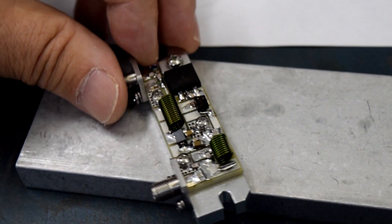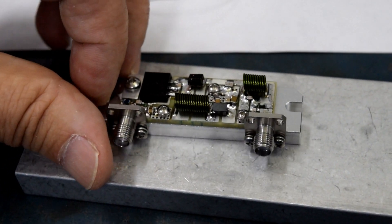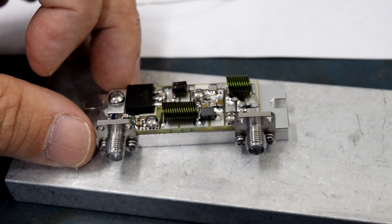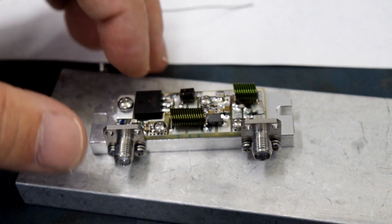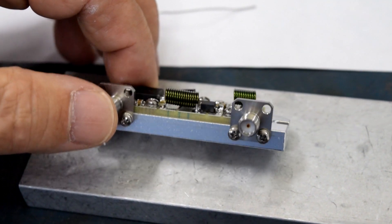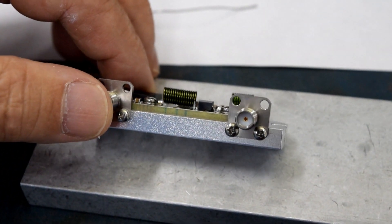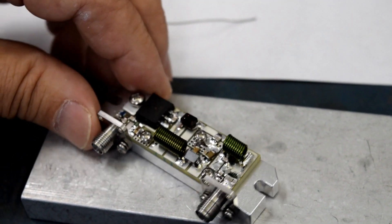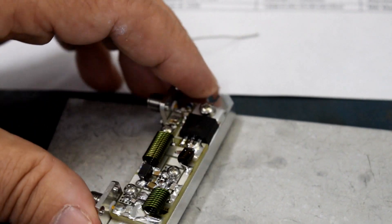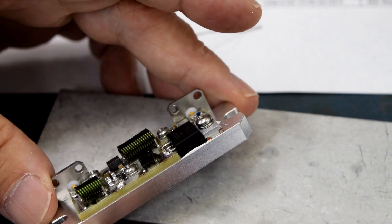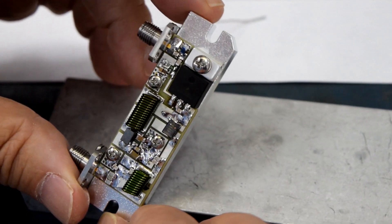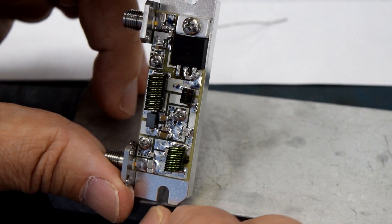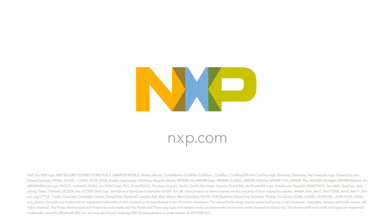So here we have the completed project, and do a final inspection. You may want to clean up some of the flux residue with some alcohol, but that is optional. And that brings the video to a conclusion. So thank you very much for watching this video, and if you need any information, please contact your NXP distributor.